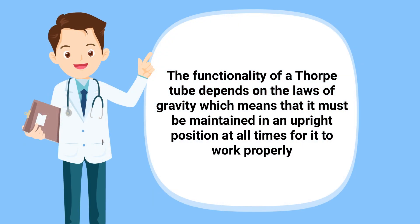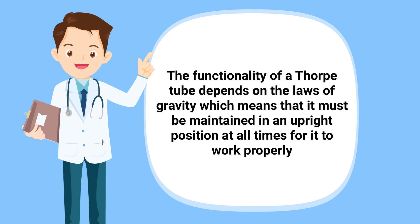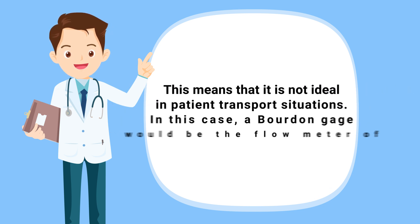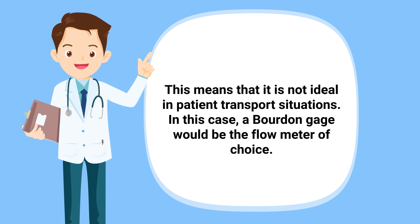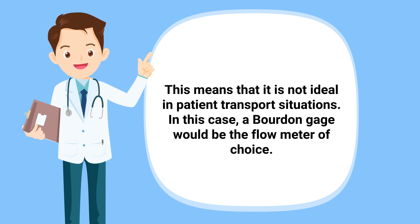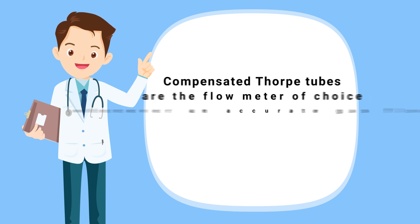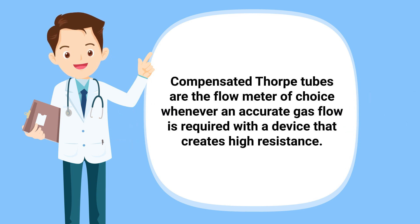The functionality of a thorpe tube depends on the laws of gravity, which means that it must be maintained in an upright position at all times for it to work properly. This means that it is not ideal in patient transport situations. In that case, a bourdon gauge would be the flow meter of choice, which is a topic covered in a separate video on our channel.